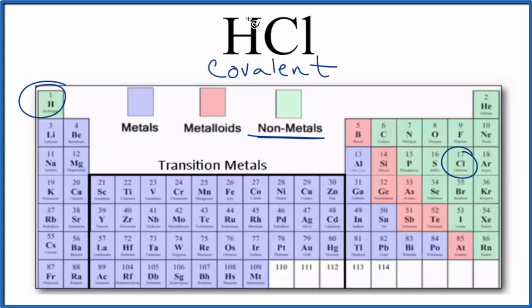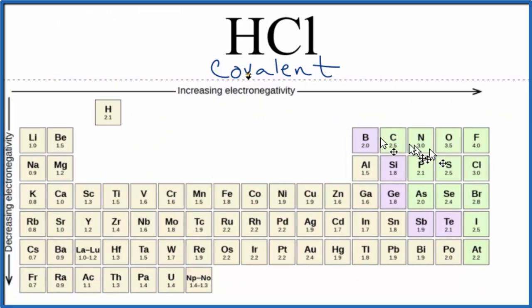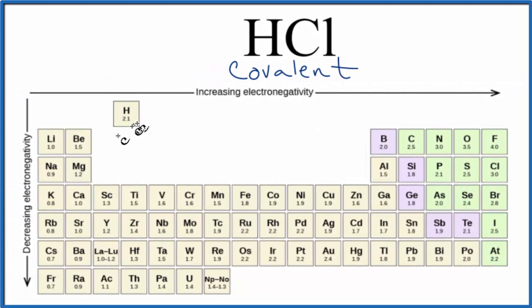We can look at the electronegativity difference between the hydrogen and the chlorine atom as well to tell us whether this would be ionic or covalent. So here's the periodic table with the values for electronegativity written in. We find hydrogen, which is 2.1. Chlorine, that's 3.0.